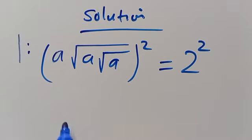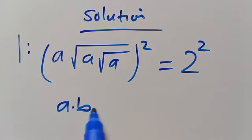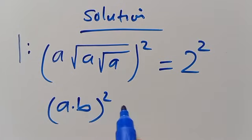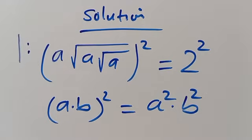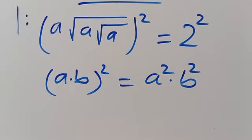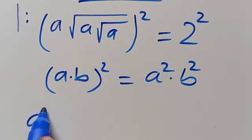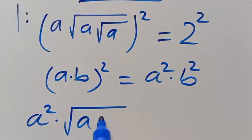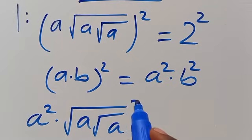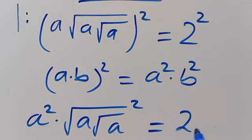So from here, recall that when we have (A·B) to the power of 2, it equals A to the power of 2 multiplied by B to the power of 2. So from here, we will have A squared multiplied by root of A into root A, to the power of 2, equals 2 to the power of 2.